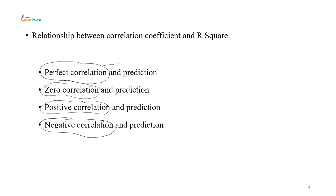जब perfect correlation होता है तो value plus 1 या minus 1 होती है। plus 1 और minus 1 हमें बताते हैं कि दोनों के बीच changes एक जैसे हैं, same proportion में हो रहे हैं। तो उस condition में यदि A और B के बीच perfect correlation है चाहे plus में हो या minus में, तो हम A से बड़ी आसानी से B को predict कर सकते हैं, क्योंकि दोनों एक जैसी nature अपने changes में show कर रहे हैं।